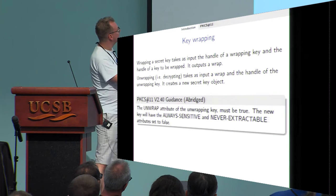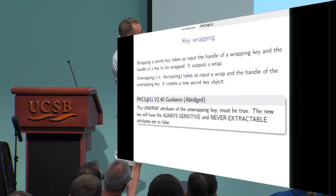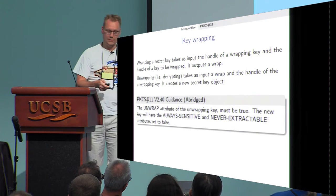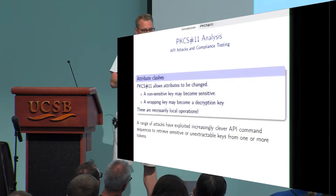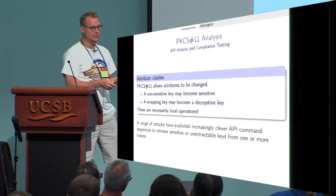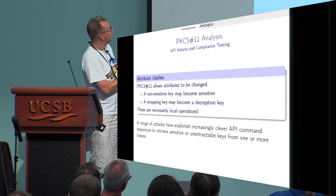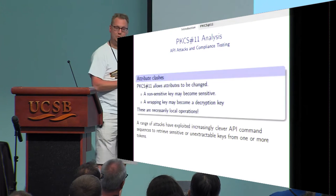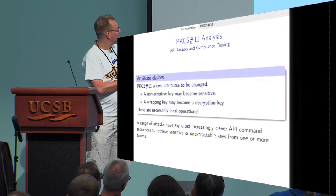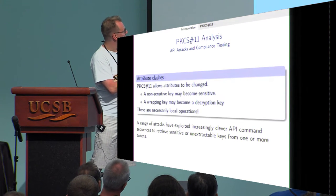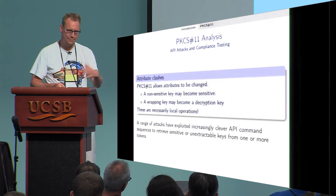When you unwrap — after having wrapped — there are some things that also shouldn't or should be set. The conclusion is that there can be attribute clashes: a non-sensitive key may become sensitive, or a wrapping key may become a decryption key, which enables an attack. You want to make sure these attributes stay the same or can't move in bad directions.